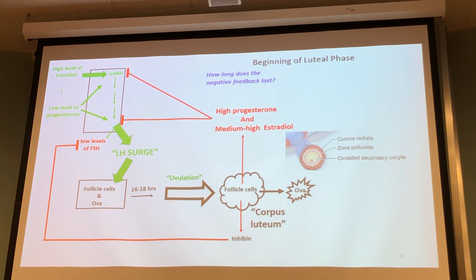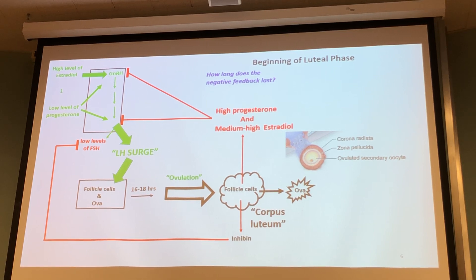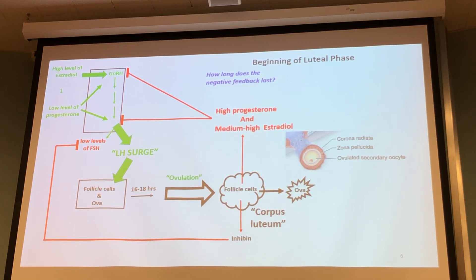When the LH surge has peaked — at its maximum highest level — I then start a 16 to 18 hour time clock. Some books give a 36 to 38 hour window, but they start the clock at the beginning of LH release. I start the clock at the peak of LH release. At that peak I ask: how many hours until the ovum leaves the follicle structure? That's 16 to 18 hours.